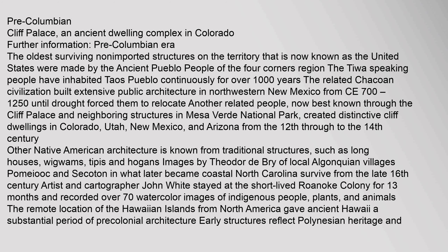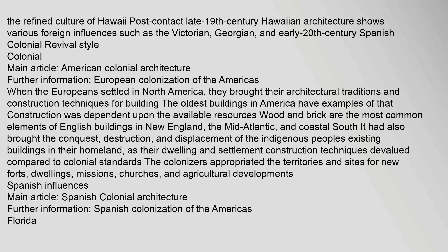Other Native American architecture is known from traditional structures such as long houses, wigwams, tipis, and hogans. Images by Theodore de Bry of local Algonquian villages Pomeioc and Secotan in what later became coastal North Carolina survive from the late 16th century. Artist and cartographer John White stayed at the short-lived Roanoke Colony for 13 months and recorded over 70 watercolor images of indigenous people, plants, and animals. The remote location of Hawaii gave ancient Hawaii a substantial period of precolonial architecture, with early structures reflecting Polynesian heritage and foreign influences such as Victorian, Georgian, and early 20th century Spanish Colonial Revival style.